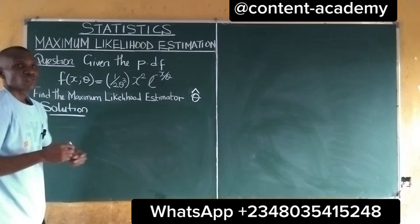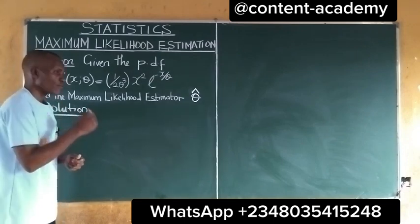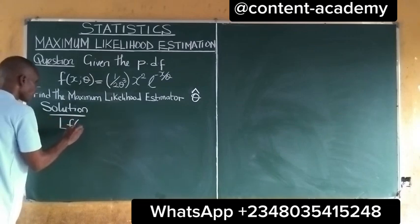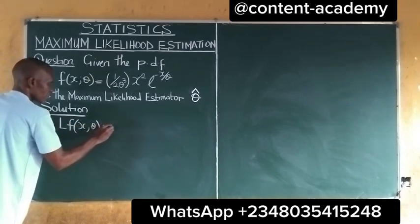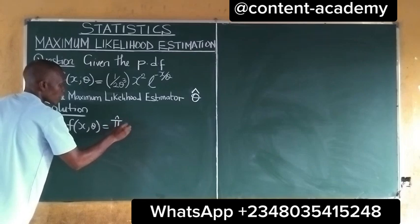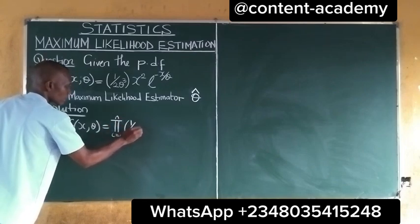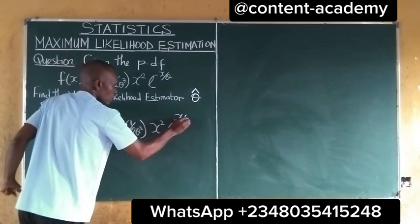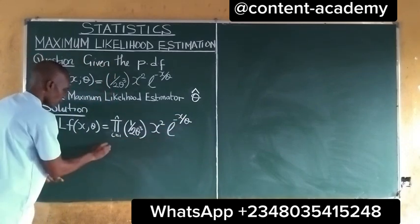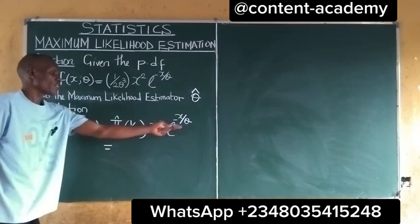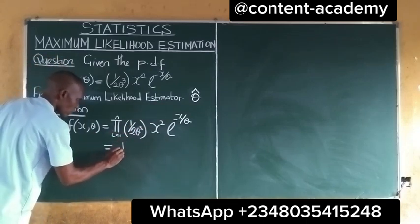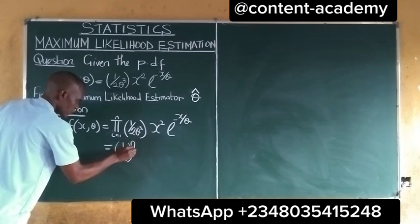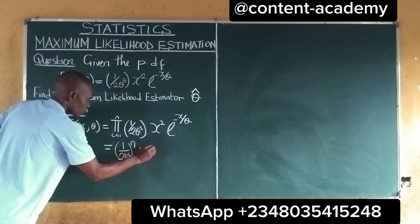The first thing to do to obtain the maximum likelihood estimator of any function is to take the likelihood function. The likelihood function is simply the product of the given PDF. So if we take the product of this distribution, we get something like 1 all over 2 raised to the power of 3, raised to the power of n, times summation of xi's.